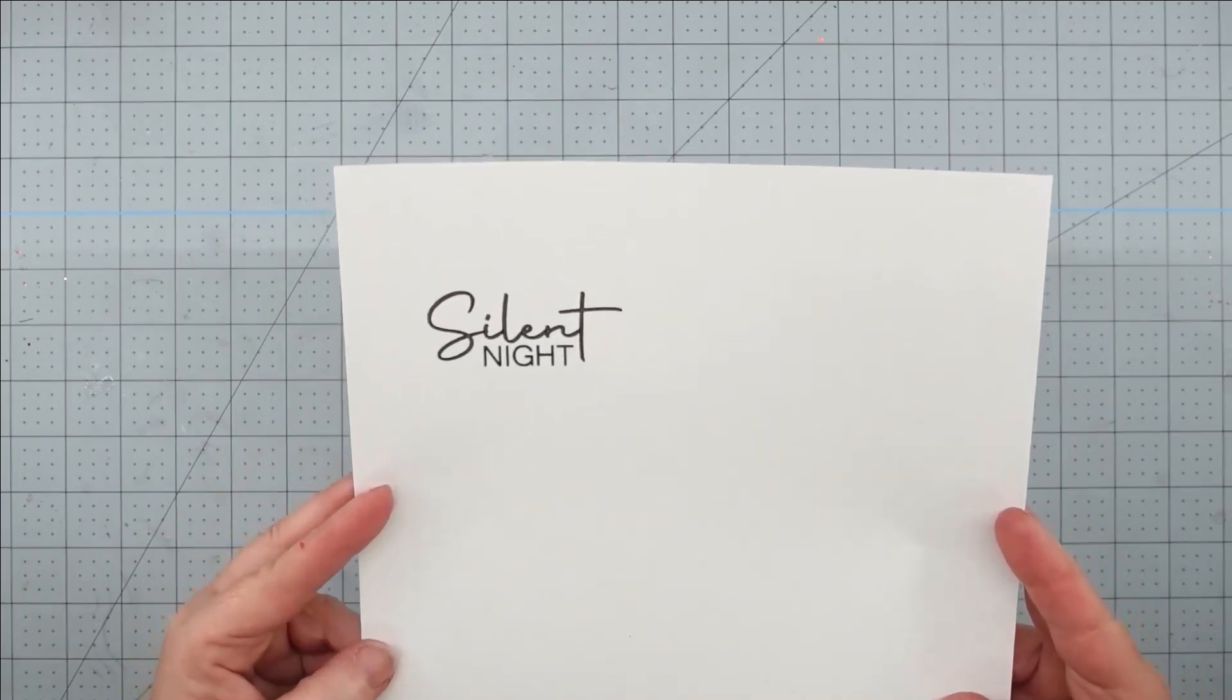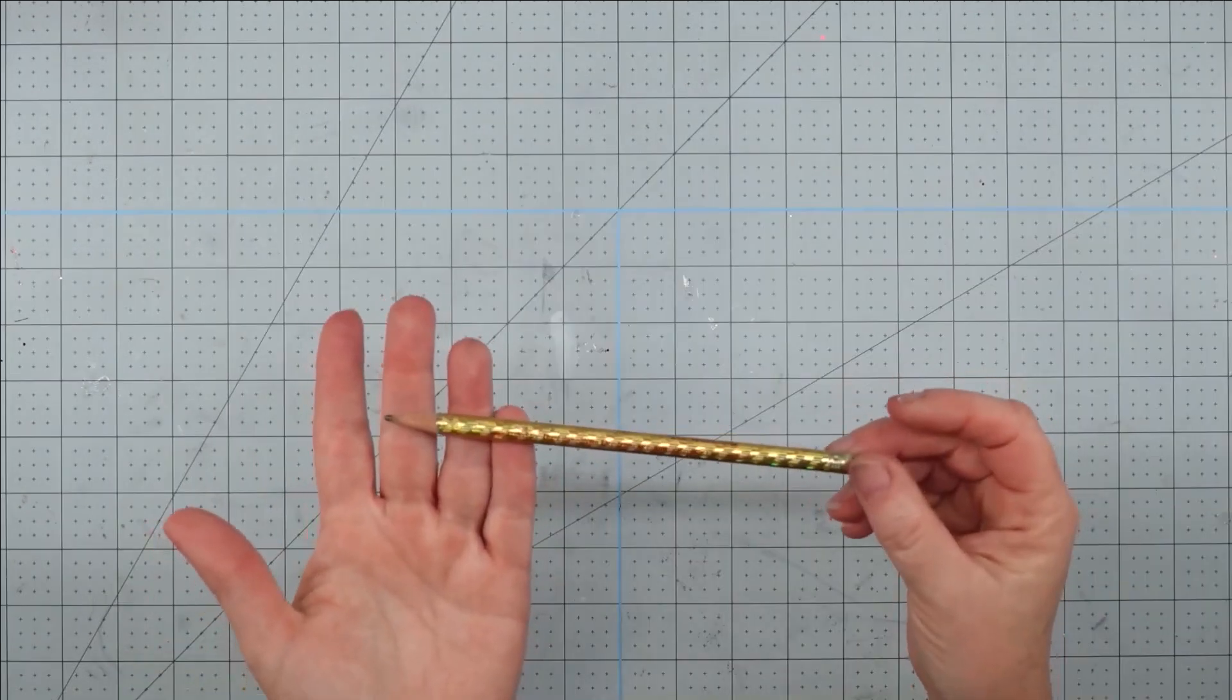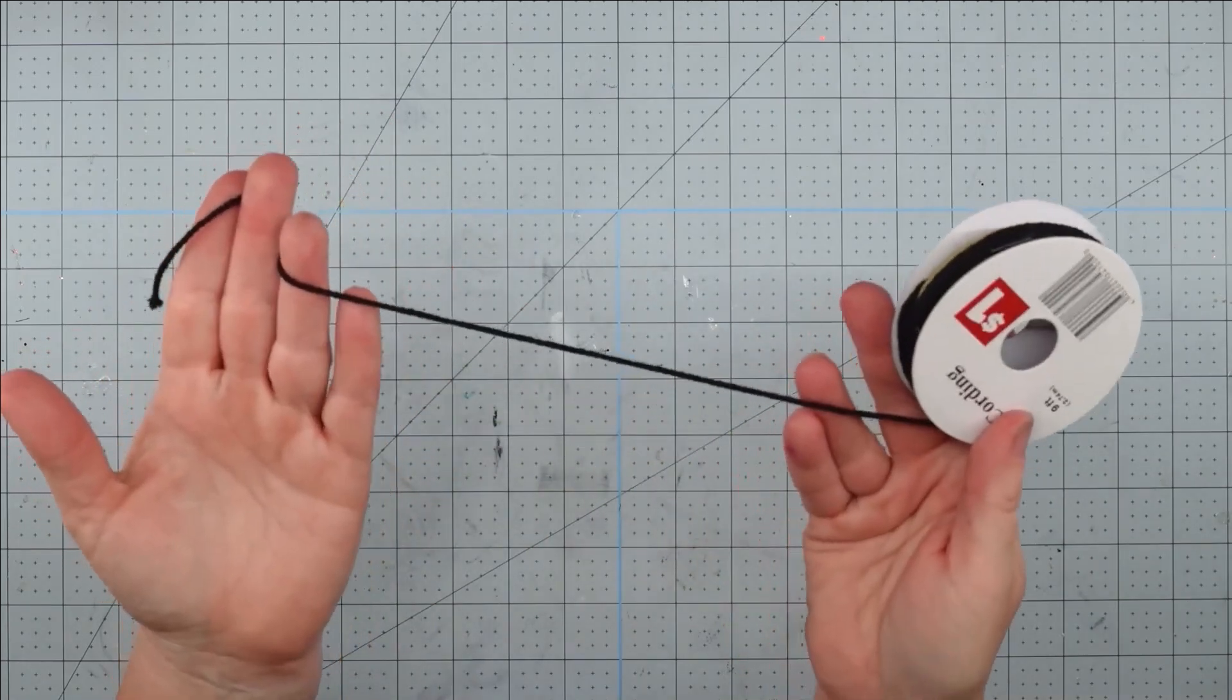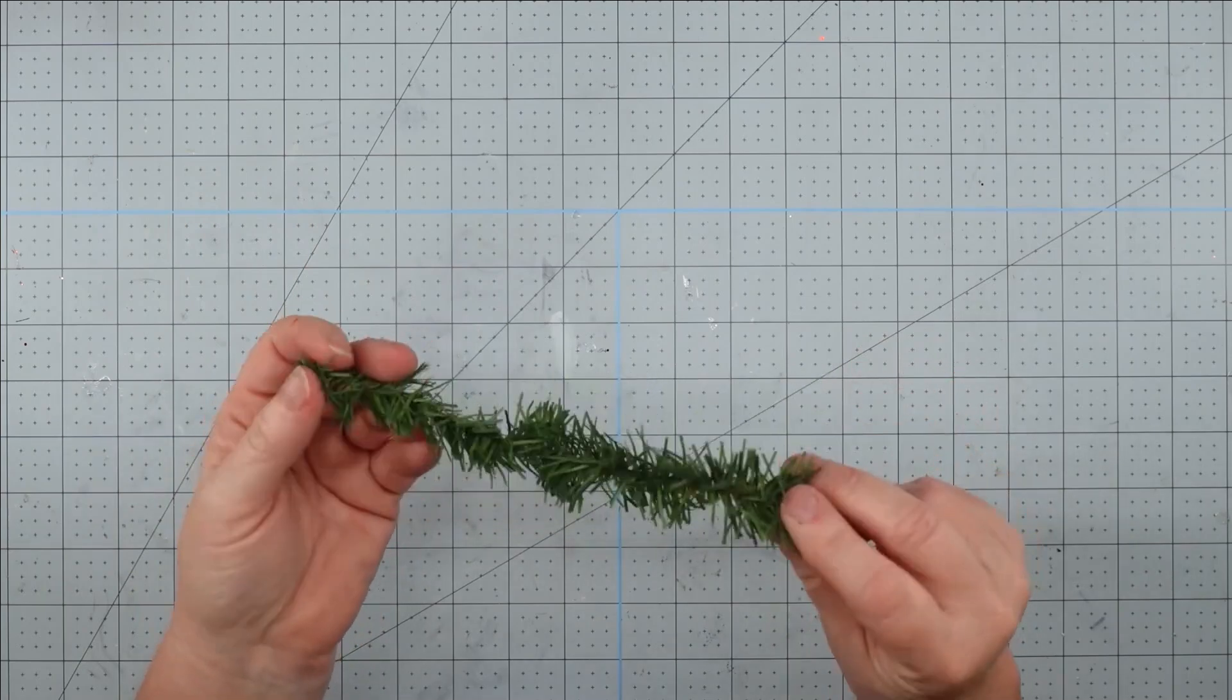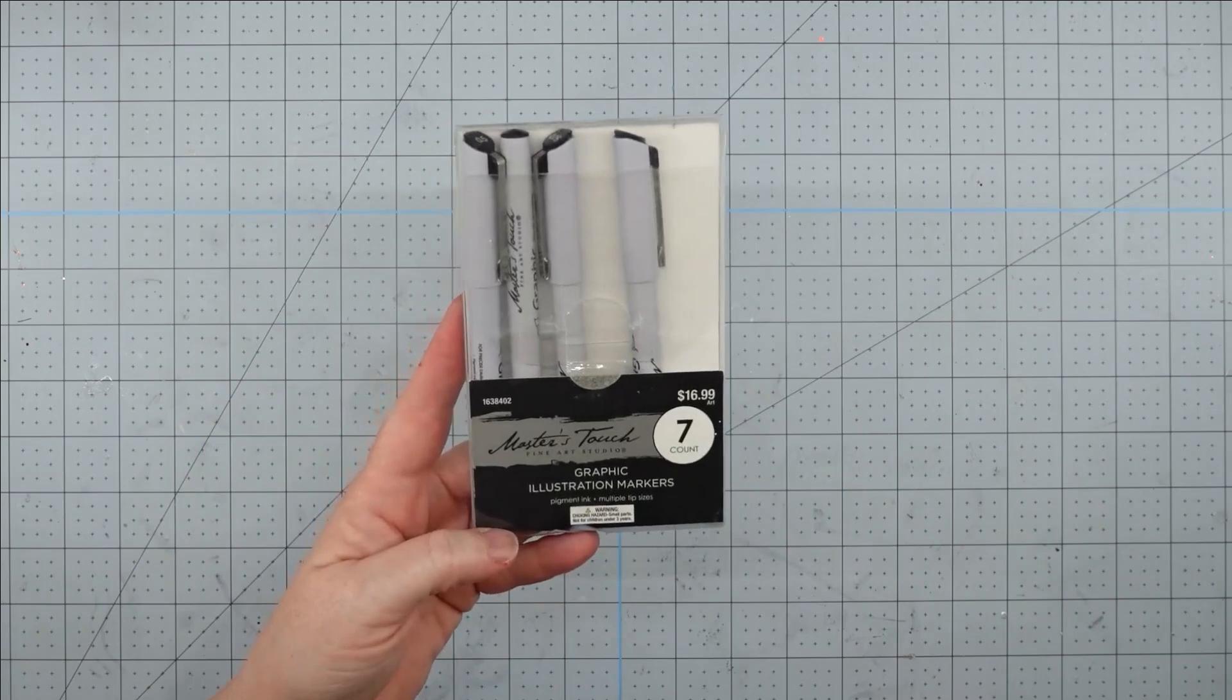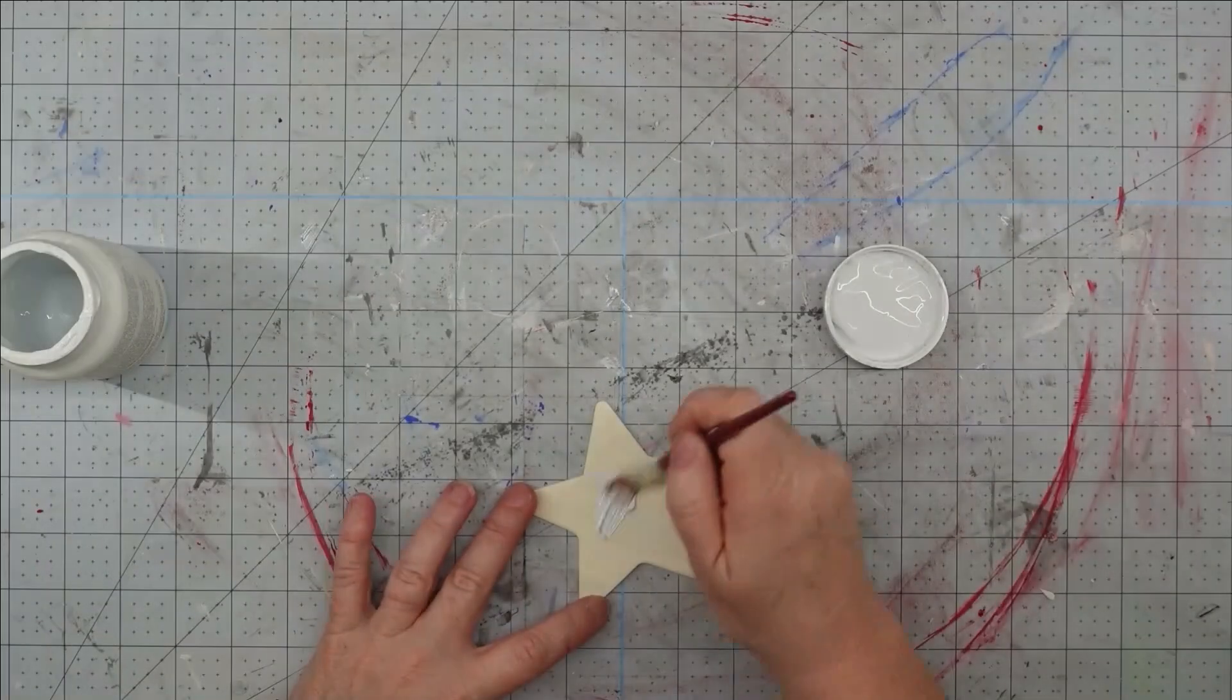A pencil, any pencil will do, some cording I'm going to use that I got from Dollar General, some leftover greenery that I had from last year, and some little red berries, a fine tip permanent marker, and my glue gun and some glue sticks.